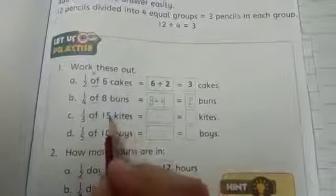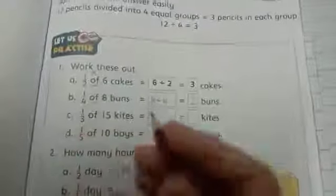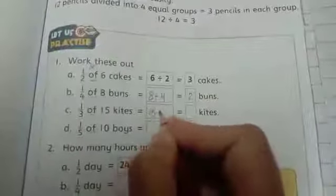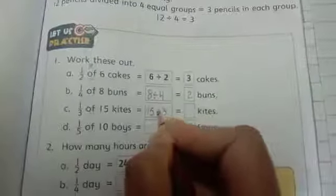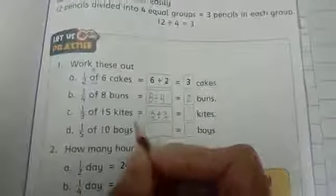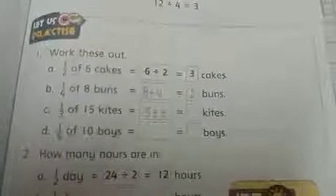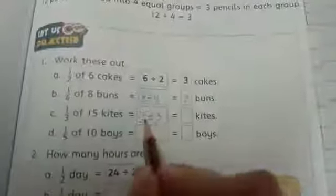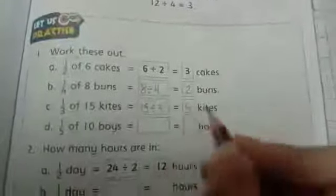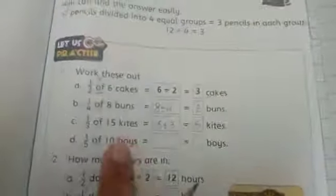This is like 1/3 of 15 kites. So what is divided by 3? 15 is divided by 3, like this. So 15 is divided by 3: 3 ones are 3, 3 twos are 6, 3 threes are 9, 3 fours are 12, 3 fives are 15. 5 divided by 5. Like this.